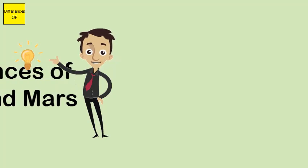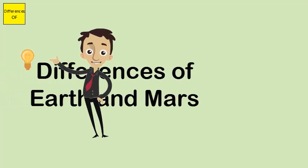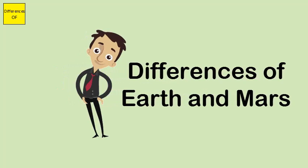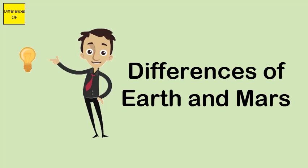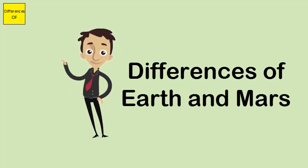Differences between Earth and Mars. Earth has water in abundance, with oceans making up more than 70% of the crust. Mars' water supply, on the other hand, is completely frozen at its poles.